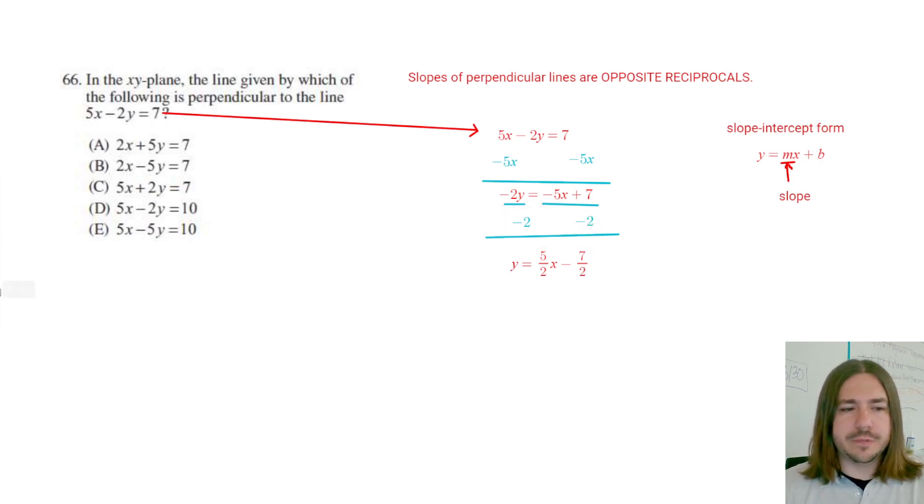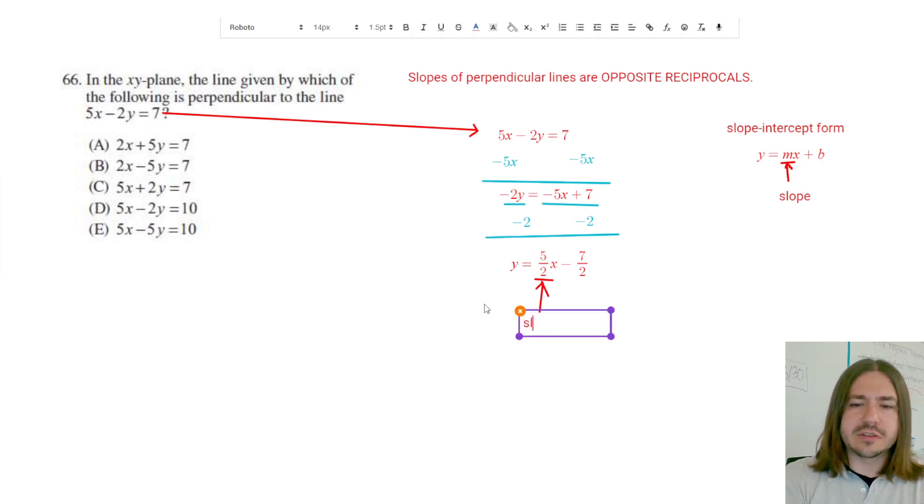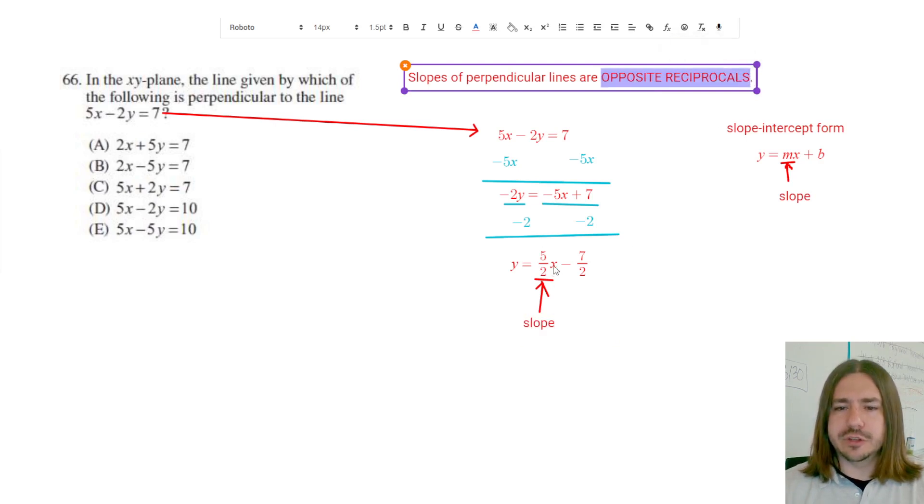So the slope here is 5 over 2. This right here is the slope. Notice how I have it in this slope-intercept form. So what I'm looking for in the answer choices is going to be an equation that has a slope that is the opposite reciprocal of 5 over 2.